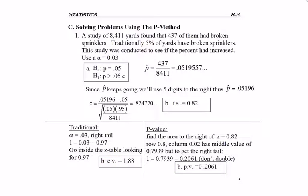Just making sure you understand where everything came from. First reading this question, a study of 8,411 yards, like front yards, found that 437 of them had broken sprinklers. Traditionally, 5% of yards have broken sprinklers. This study was conducted to see if the percent has increased. Use alpha equals 0.03, a 0.03 significance level.